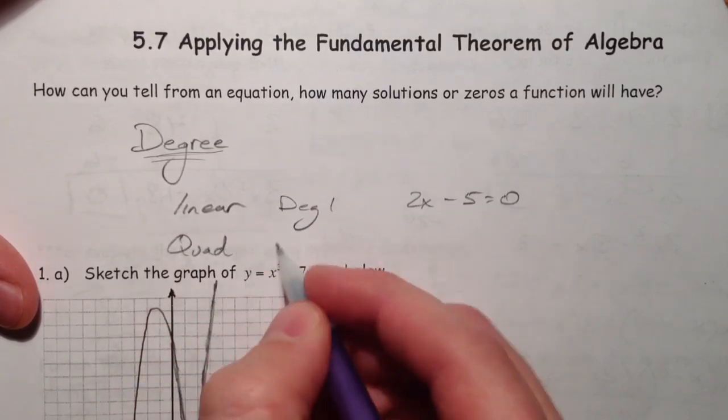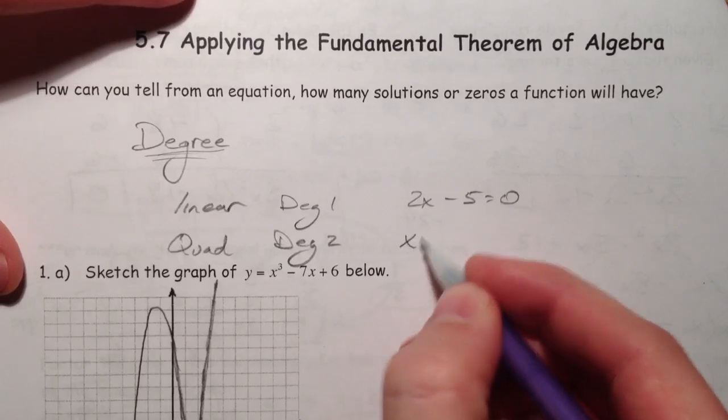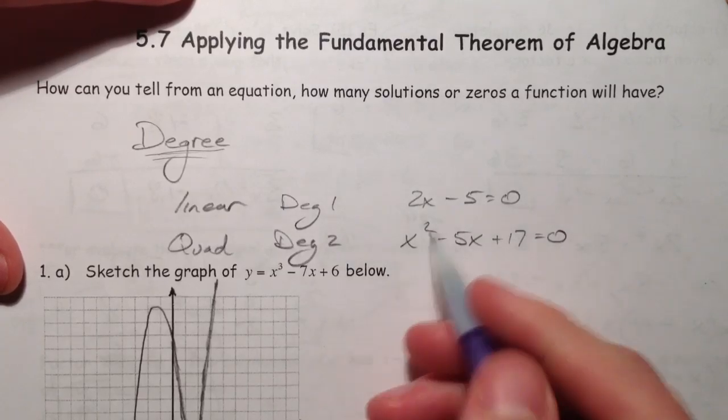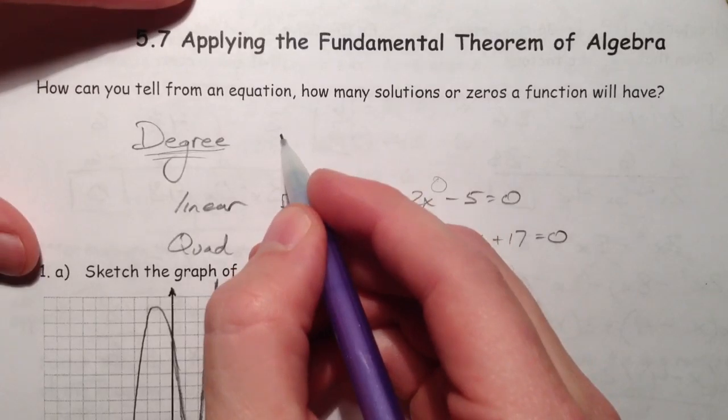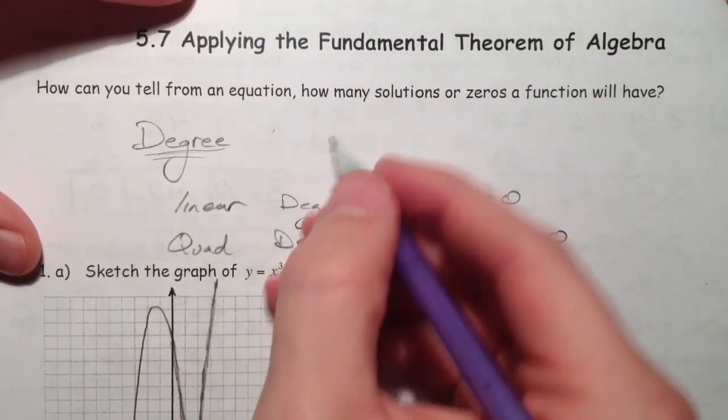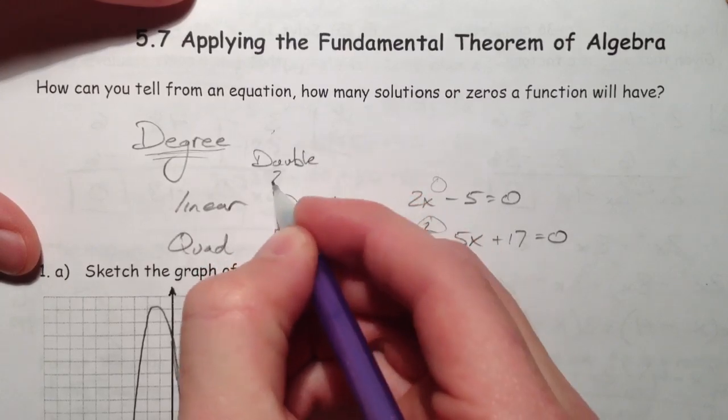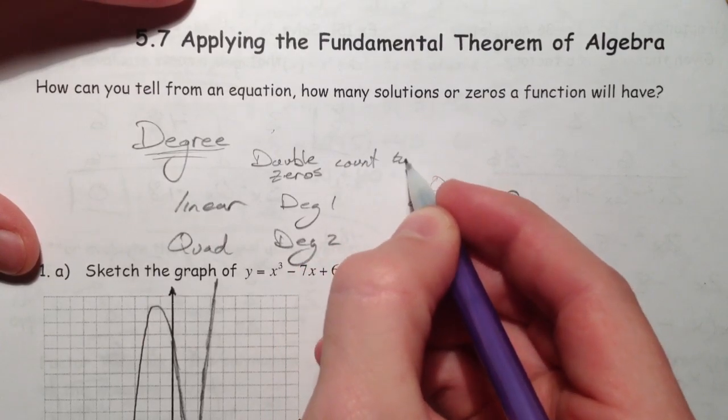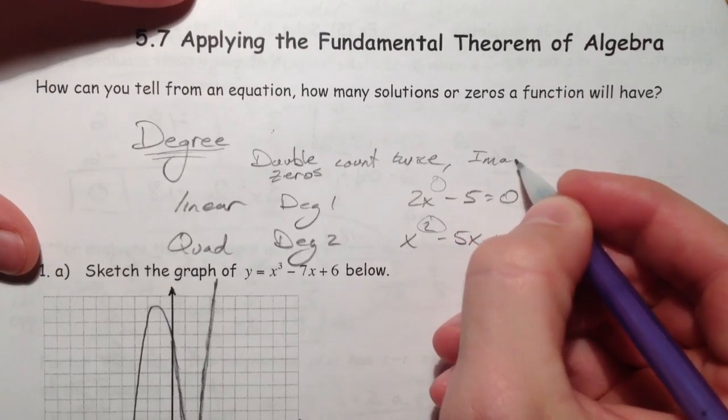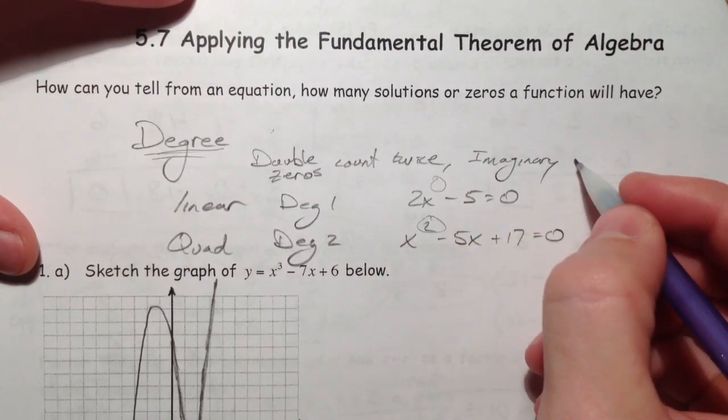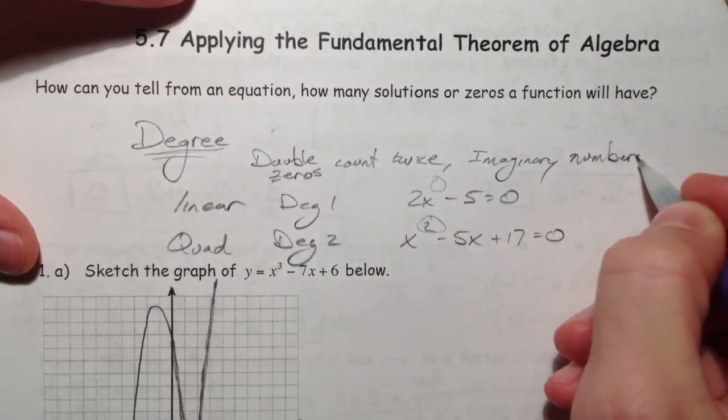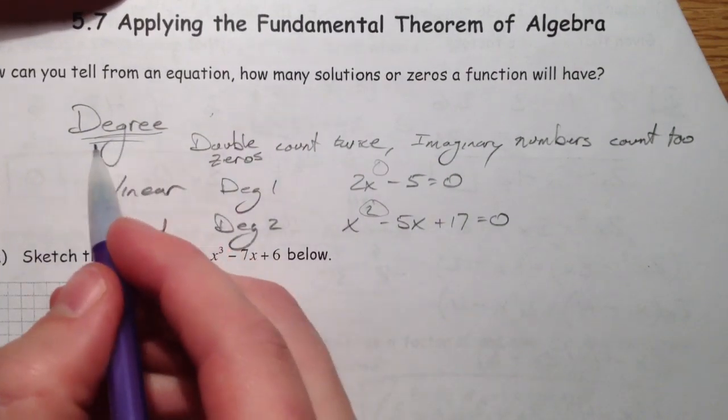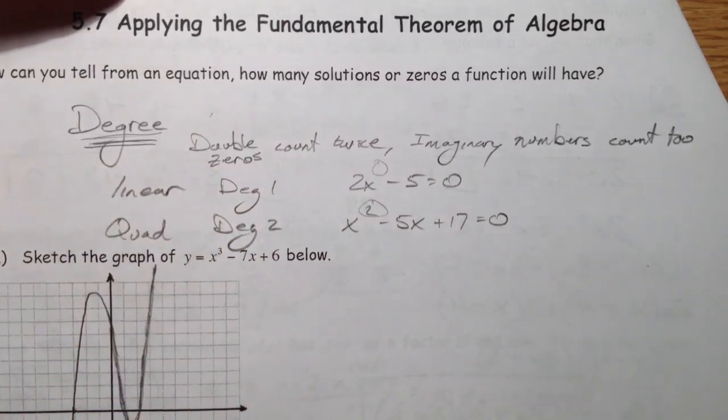A quadratic, degree 2, x squared minus 5x plus 17. Now, degree 2, degree 1, double zeros count twice. All of that goes into the degree in saying how many solutions a function will have.